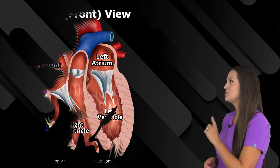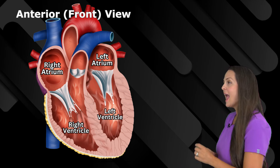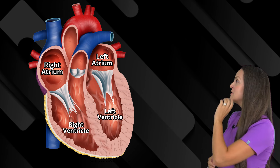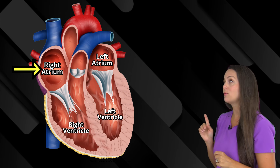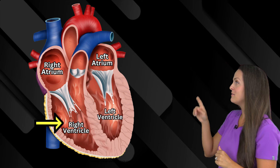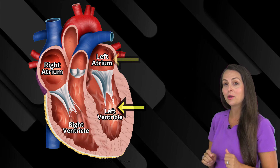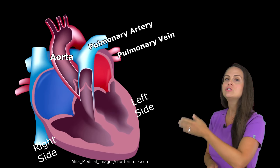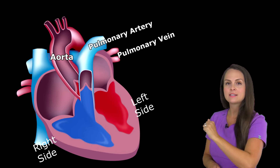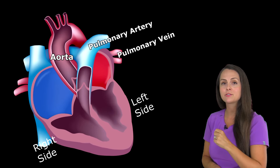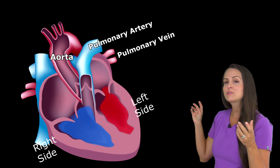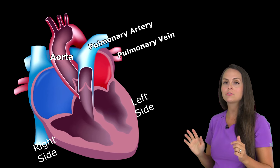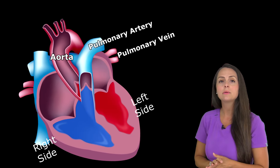Now let's go inside the heart and look at its structures. Here you'll see an anterior view of the heart and the left and right will be flipped on your view of the screen. The chambers include the right atrium on top, the right ventricle below it, the left atrium on top of the left side, and the left ventricle below that. All of these chambers work together to pump blood from the right side to the left side. Blood on the right side is deoxygenated; it goes up through the pulmonary artery to the lungs, gets oxygenated, returns to the left side via the pulmonary vein entering the left atrium, then travels through the left side and up through the aorta to be pumped throughout the body.